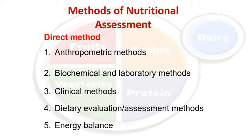Nutritional assessment can be done by direct method or by indirect method. Direct methods are commonly used in social sciences — in sociology, anthropology, food and nutrition, and public health — and community-based research is based on direct methods. The list of direct methods includes: anthropometric methods, biochemical and laboratory methods, clinical methods, dietary evaluation and assessment methods, and energy balance.